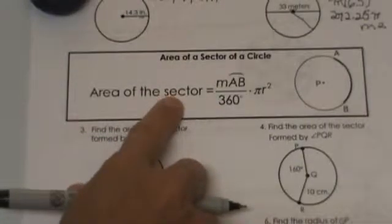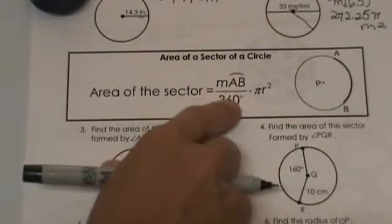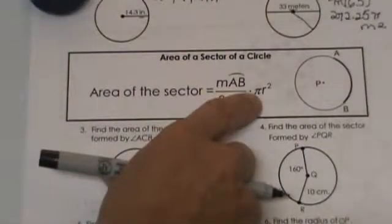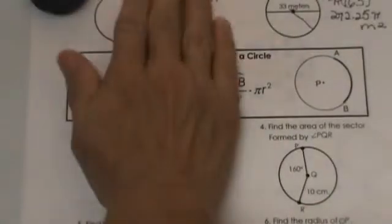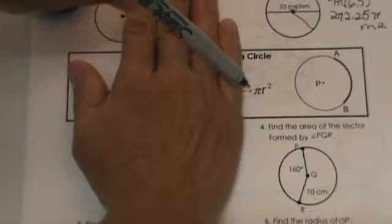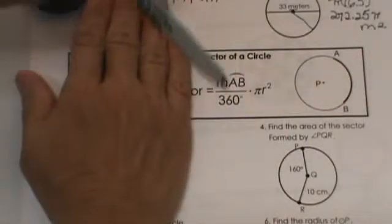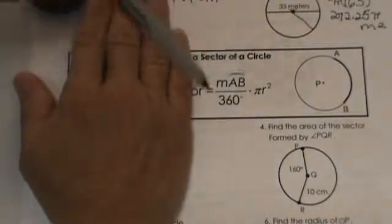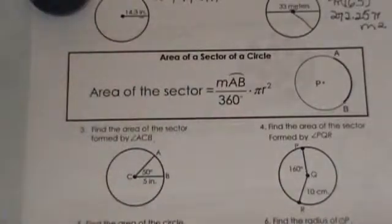The area of a sector is given by the formula: the measure of the arc over 360 times pi r squared. So what we are doing is we are finding first the area of the circle here, and then we are going to multiply it by the fraction of the circle that we are referring to. What is the size of the slice of pizza, because that is the fraction of the circle we are given.